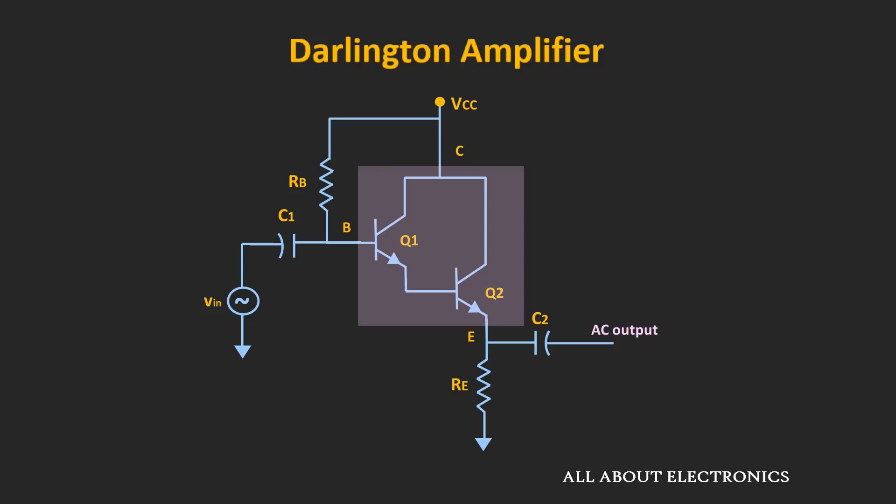This is the circuit of the Darlington amplifier, which acts as a very high performance emitter follower. As you can see over here, the input is applied at the base terminal, while the output is taken across the emitter terminal. We will do both AC and DC analysis of the given amplifier.